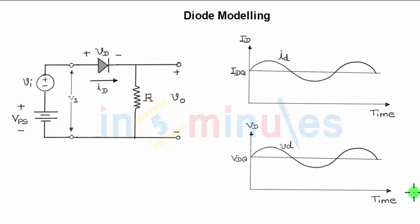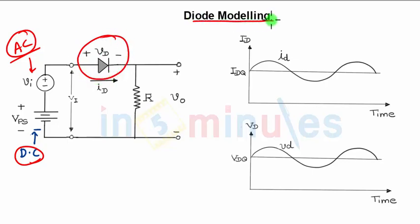Diode modeling means when you are applying AC as well as DC supply voltage to the diode. When you look at the diagram, you are applying DC - this source is the DC source and the other source is the AC source. When you are applying DC as well as AC together to the diode, how it will behave is the modeling of the diode. I will represent the diode when it is supplied with AC as well as DC.